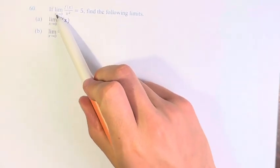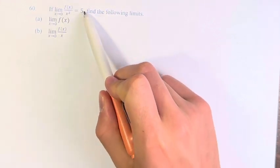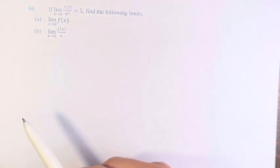Hello and welcome back to another video. In this problem, we're asked if the limit as x approaches zero of f(x) over x squared is equal to 5, find the following limits.